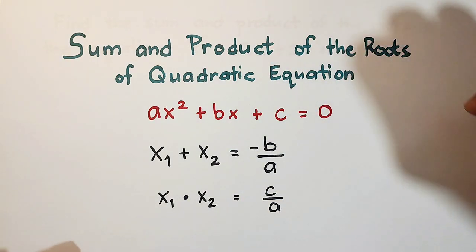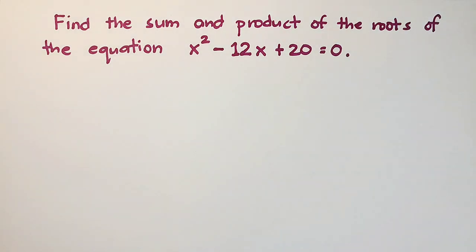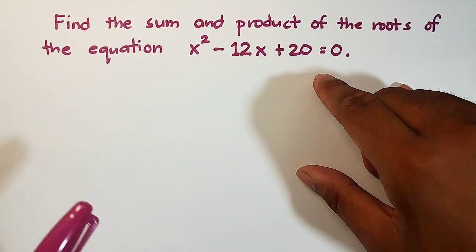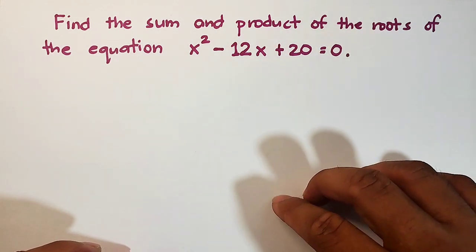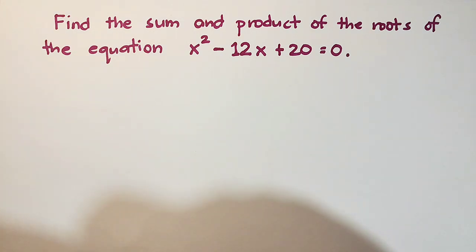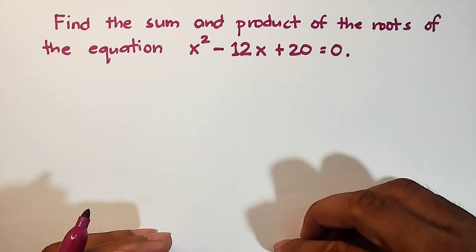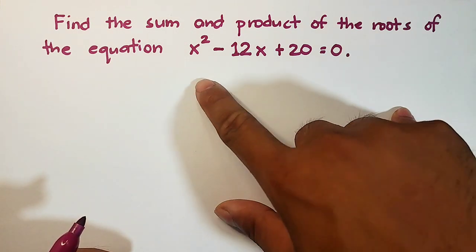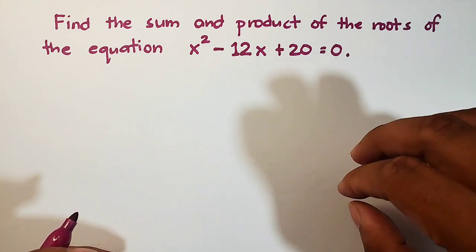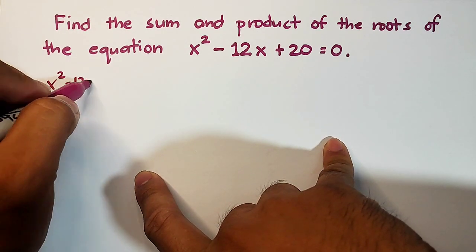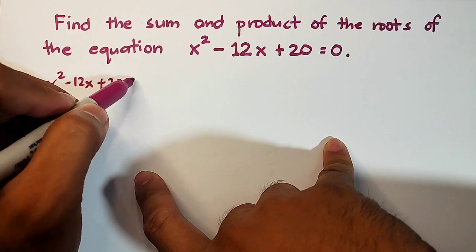So without further ado, let's do this topic. We have this problem: find the sum and product of the roots of the equation x squared minus 12x plus 20 is equal to 0. What does it mean when we say sum and product? We need to add and multiply the roots of the quadratic equation. We will try to solve this manually, and after that, we will use the formula.